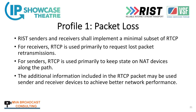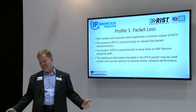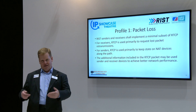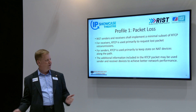RIST senders and receivers shall implement a minimal subset of RTCP. For receivers, RTCP shall be used as the primary mechanism for requesting lost packet retransmission. For senders, RTCP is used primarily to maintain state for NAT devices along the path. Additional information included in the RTCP packet may be used by sender and receiver devices to achieve better network performance.